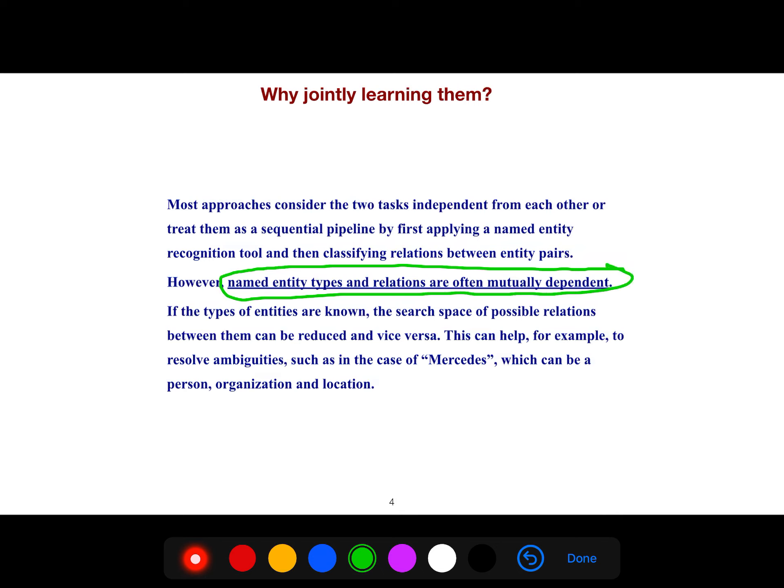If the types of entities are known, the search space of possible relations between them can be reduced. This can help resolve ambiguities, such as Mercedes, which can be a person, organization, or location. So we're modeling context and entities.